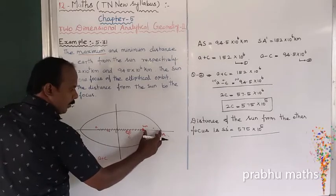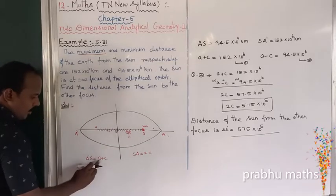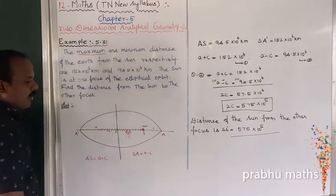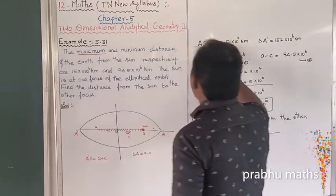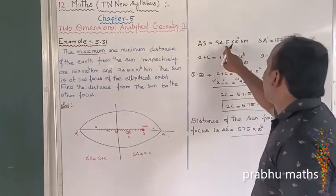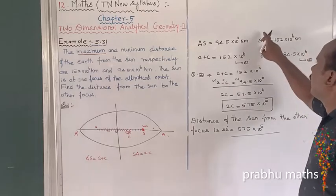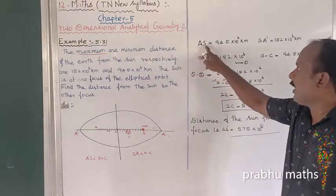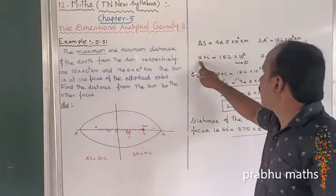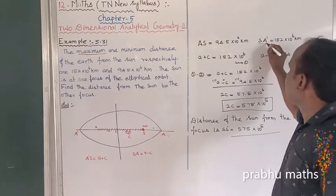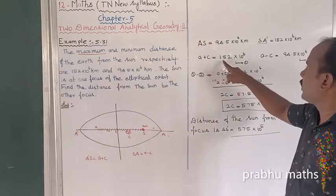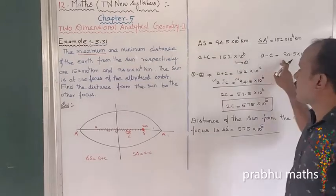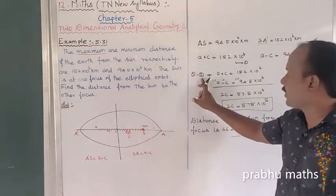The maximum distance SA' = a + c = 152×10⁶ km. The minimum distance SA = a − c = 94.5×10⁶ km. These are our two equations.